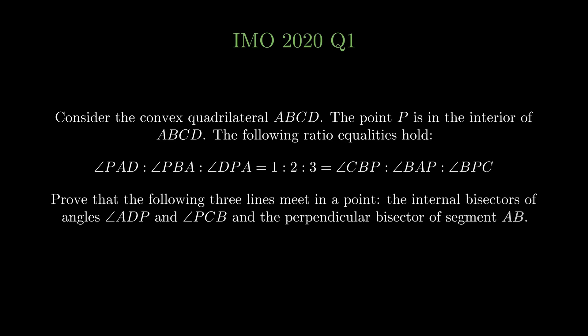Since this is a geometry problem, the first thing we should do is draw a diagram. When I first saw the conditions, I found the ratios pretty weird, but actually they're what we would call a scam, because they make the problem seem harder than it actually is. The first diagram we should draw is an approximate diagram, just to see where the points are roughly. Once you see the diagram is pretty much centered around triangle APB, this leads to an equivalent formulation of the problem.